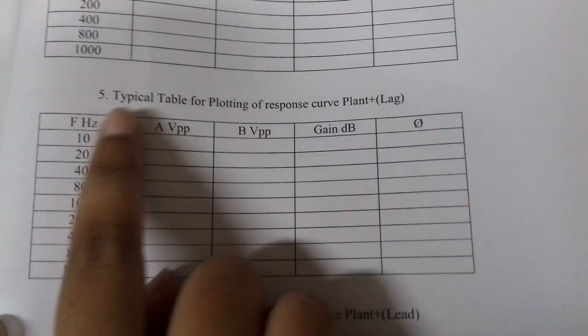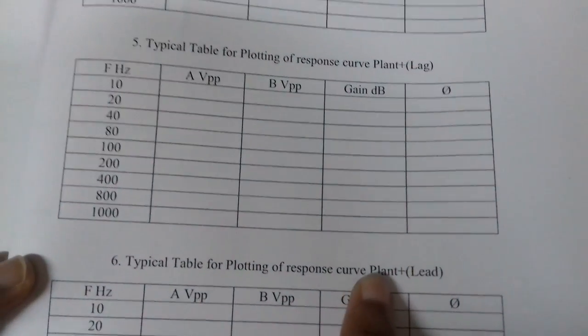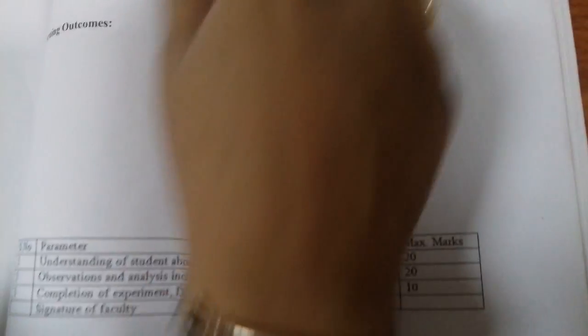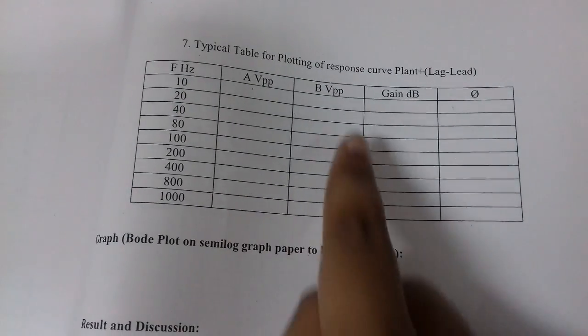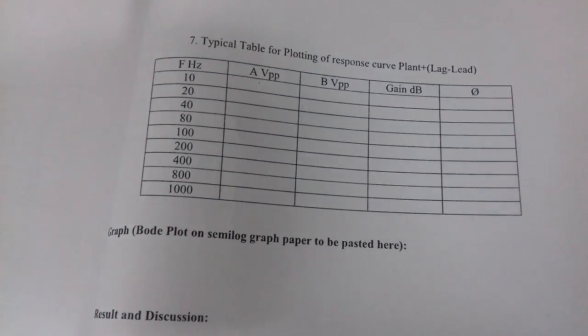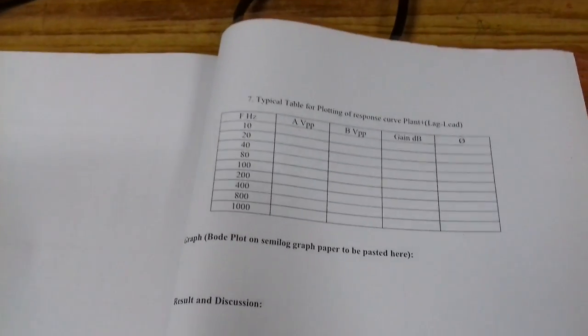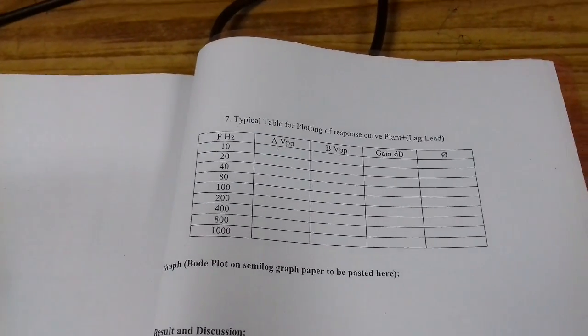The table which we are going to make will be this one: plotting of response curve plant plus lag, plant plus lead, and finally plant plus lag-lead. The observations are the same - input characteristics, output, and gain, and after that phase. The observations have to be converted into a tabular form and then a plot is to be made which will be known as the Bode plot.